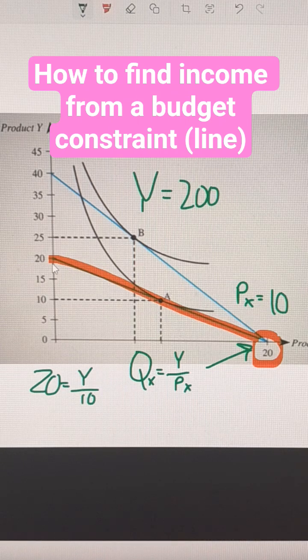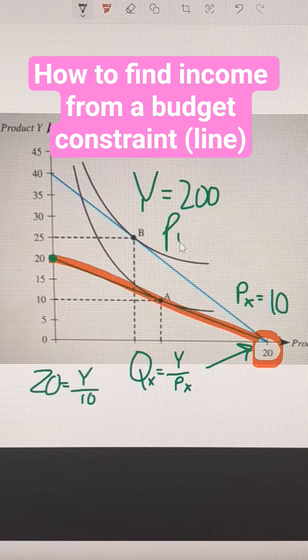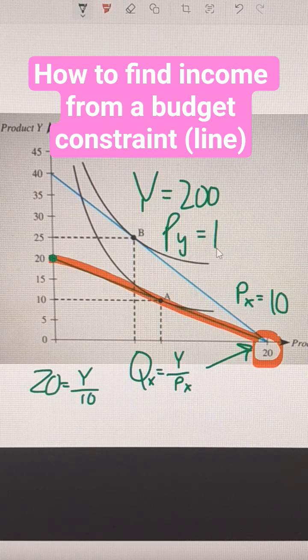Because this budget line is straight, and we can also buy 20 units of good Y at the intercept, the price of good Y would also be 10.